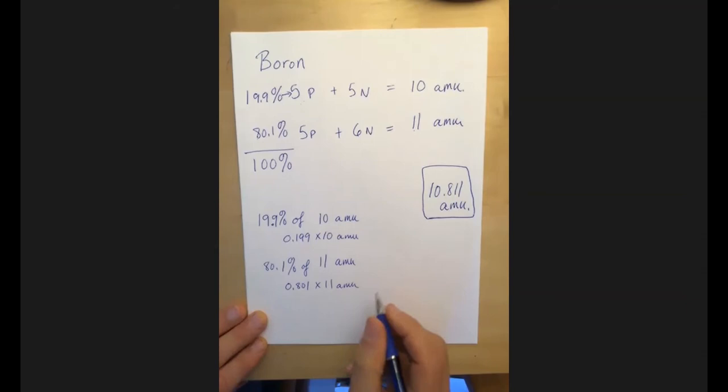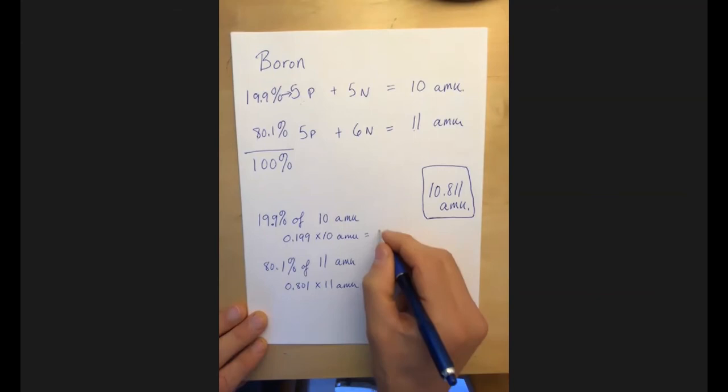And this, I should be able to do this one in my head, but I didn't. I had to actually punch it in my calculator. I'm a little embarrassed to say. That's 1.99 AMUs. And this one is 8.811 AMUs.